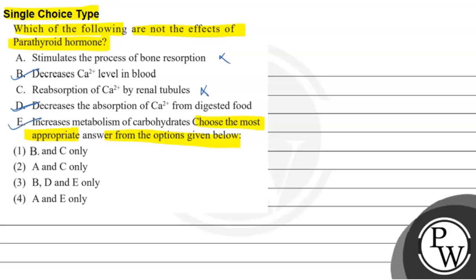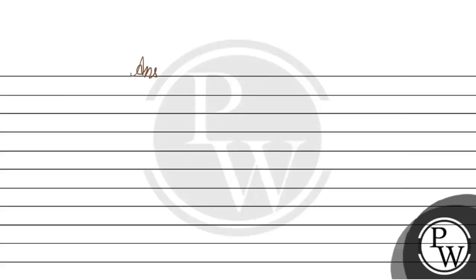So, B, D and E are not the effects of parathyroid hormone. This corresponds to option 3, which is B, D and E. So the answer will be option 3. I hope you understood parathyroid hormone.